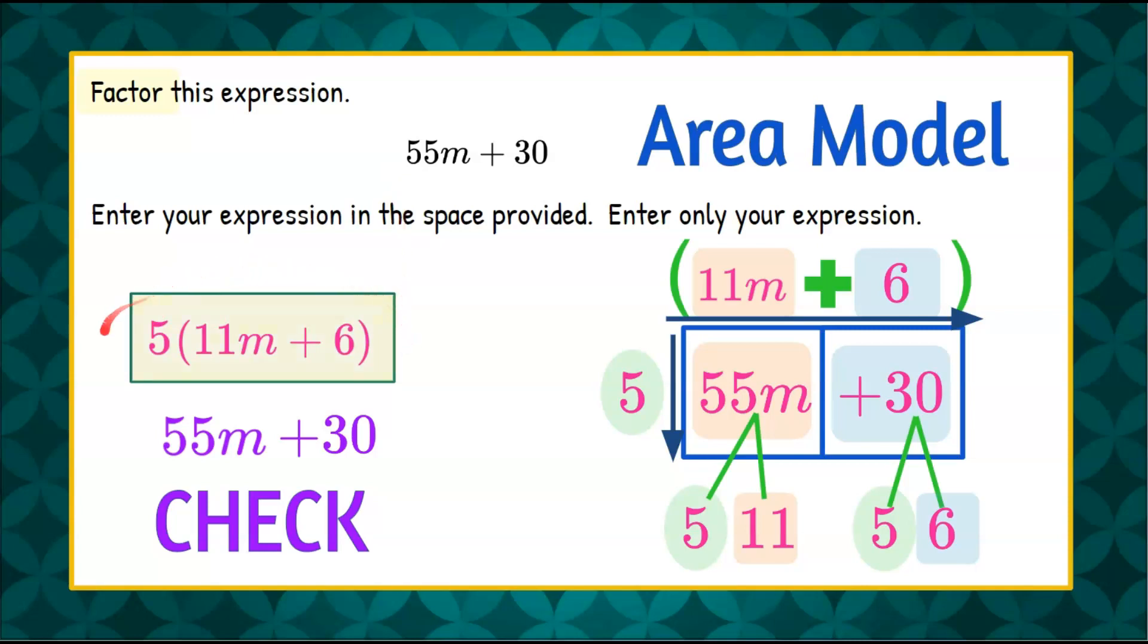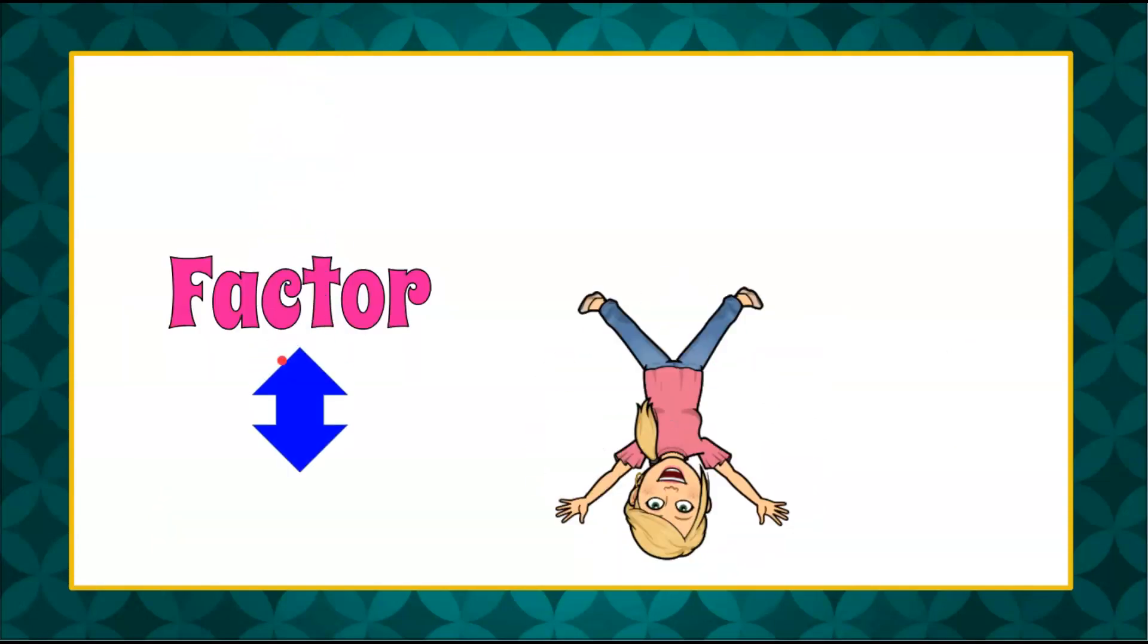Our solution, our factored expression is 5 times the quantity 11m plus 6. And there you have it.